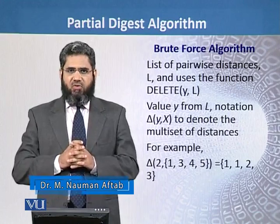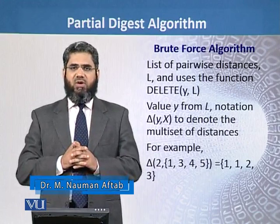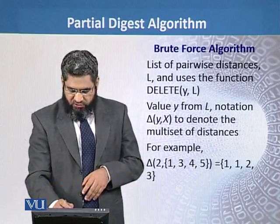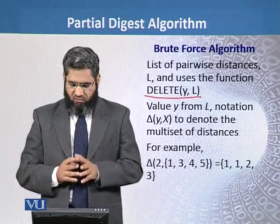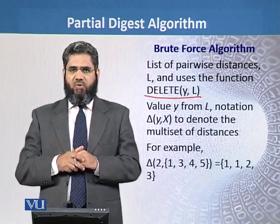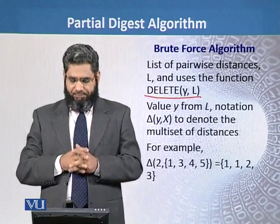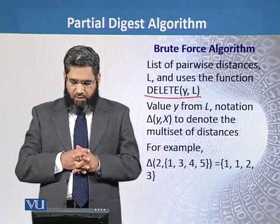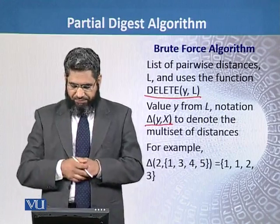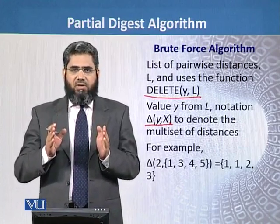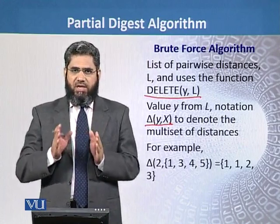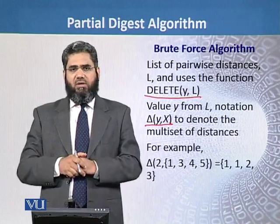We assume that we have a list of pairwise distances, which we call L. We use the function 'delete y from L', meaning the value of y will be deleted from the subset of L. We also use the notation delta(y, x), which means we will calculate the distance of y from each element of the set x.